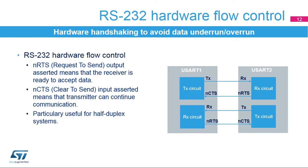In RS-232 communication, it is possible to control the serial data flow between two devices by using the N-CTS input and N-RTS output. These two lines allow the receiver and transmitter to alert each other of their state. The following figure shows how to connect two devices in this mode. The idea is to prevent dropped bits or conflicts in case of half-duplex communication. Both signals are active low.